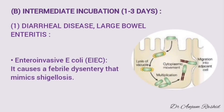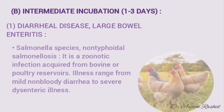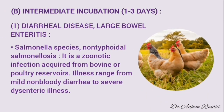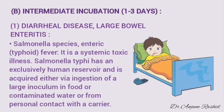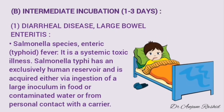The third organism in large bowel enteritis is entero-invasive E. coli, which causes a febrile dysentery that resembles shigellosis. The fourth important organism is Salmonella species, especially non-typhoidal salmonellosis, which is a zoonotic infection acquired from bovine or poultry reservoirs. Illness ranges from mild non-bloody diarrhea to severe dysenteric illness. Fifth is Salmonella typhi, which causes enteric or typhoid fever — a systemic toxic illness. Salmonella typhi has an exclusively human reservoir and is acquired via ingestion of a large inoculum in food or contaminated water, or from personal contact with a carrier.